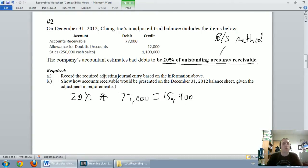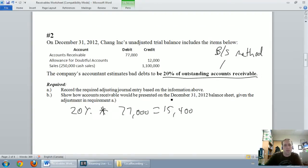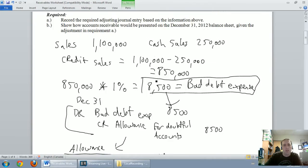Okay, so when we took a percentage of sales, I'm going to scroll back up to that last problem. I said, okay, we took a percentage of our credit sales, $8,500, and I said, that's our bad debt expense. Great. That's the income statement method.